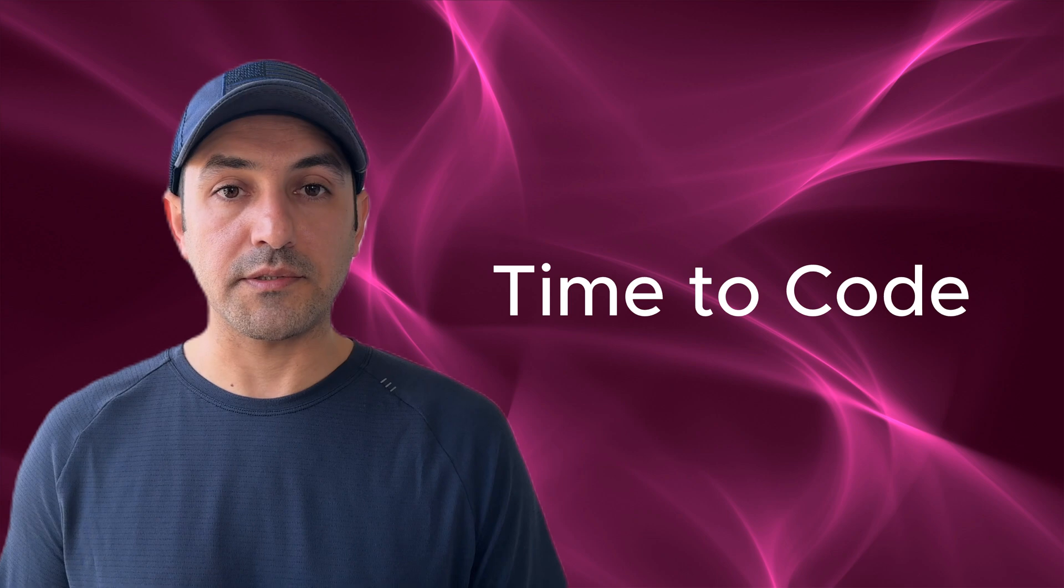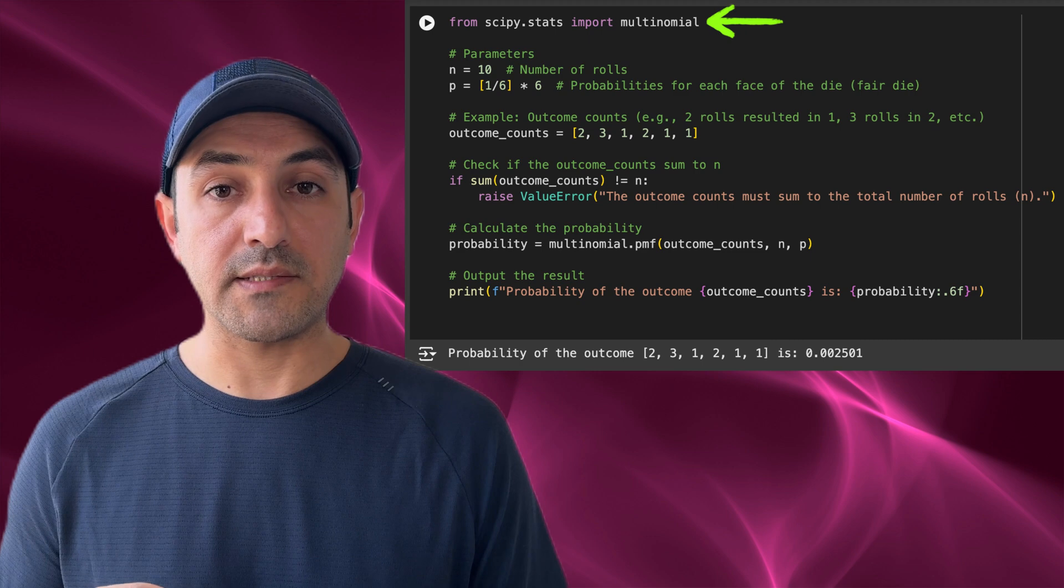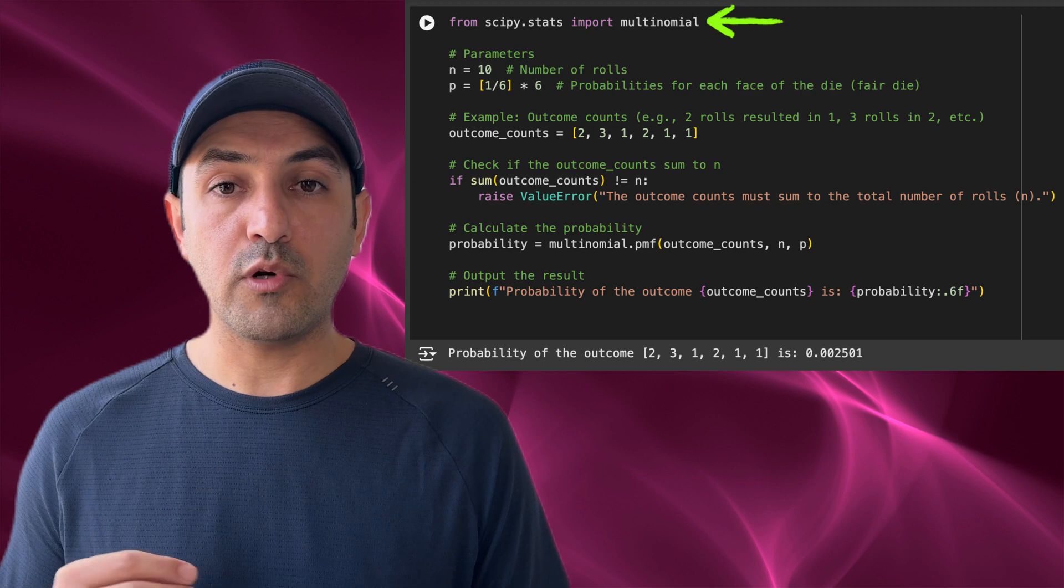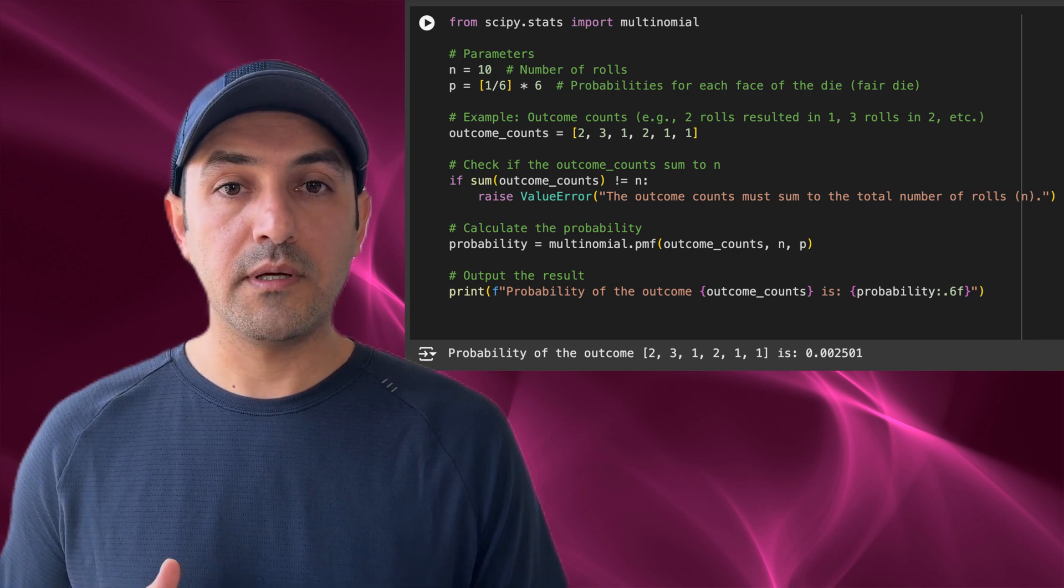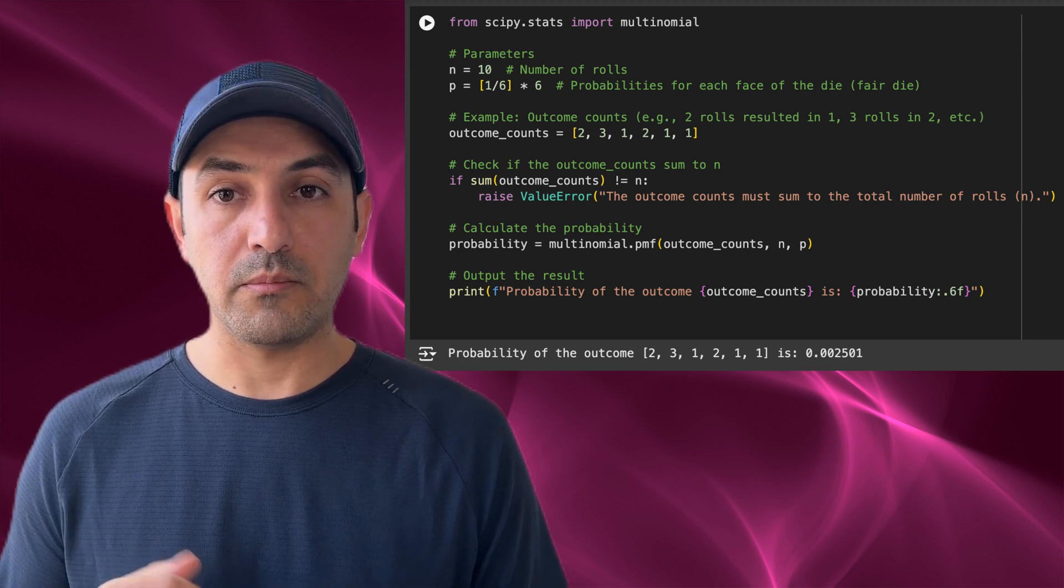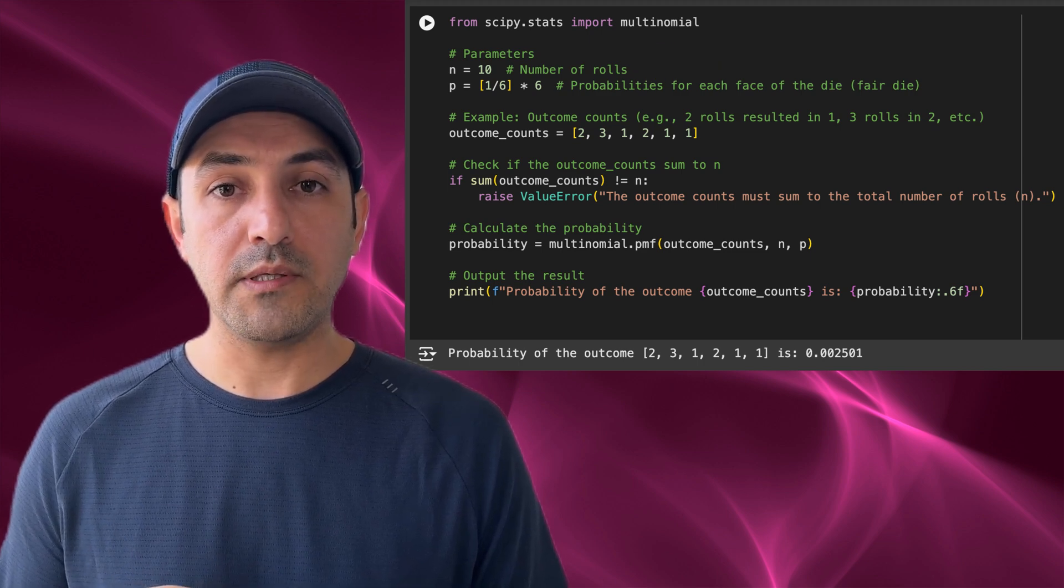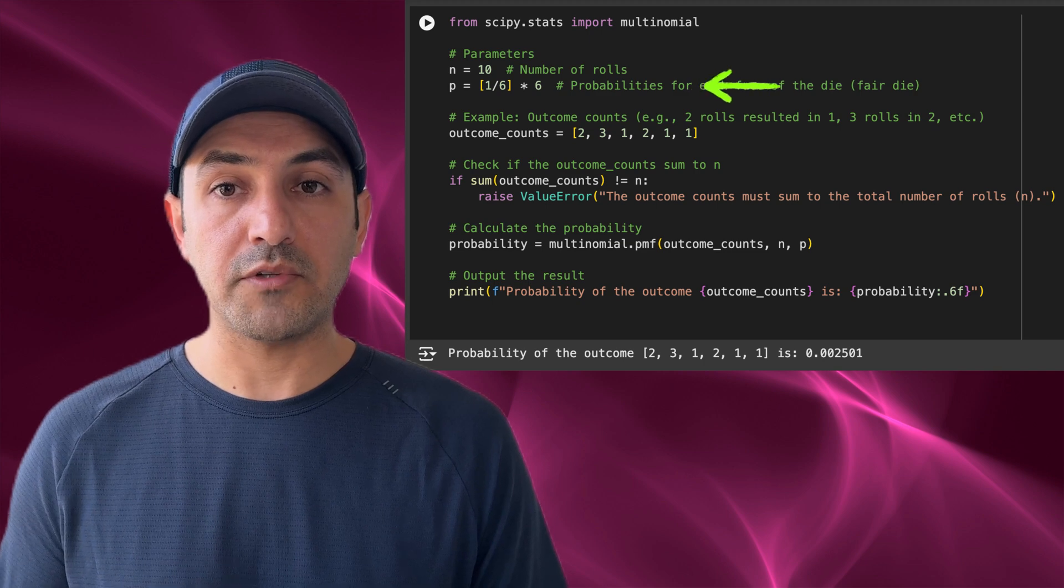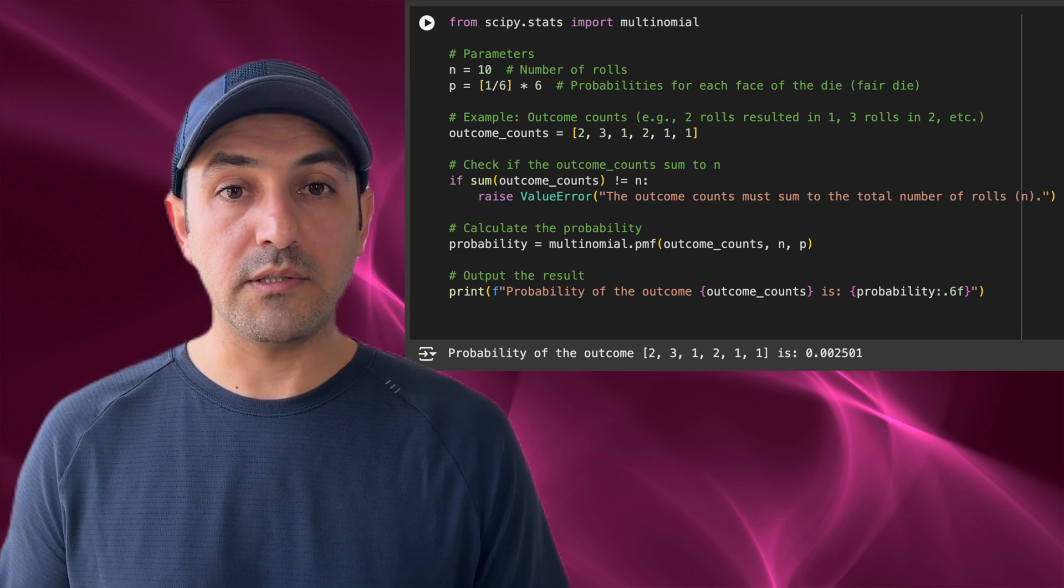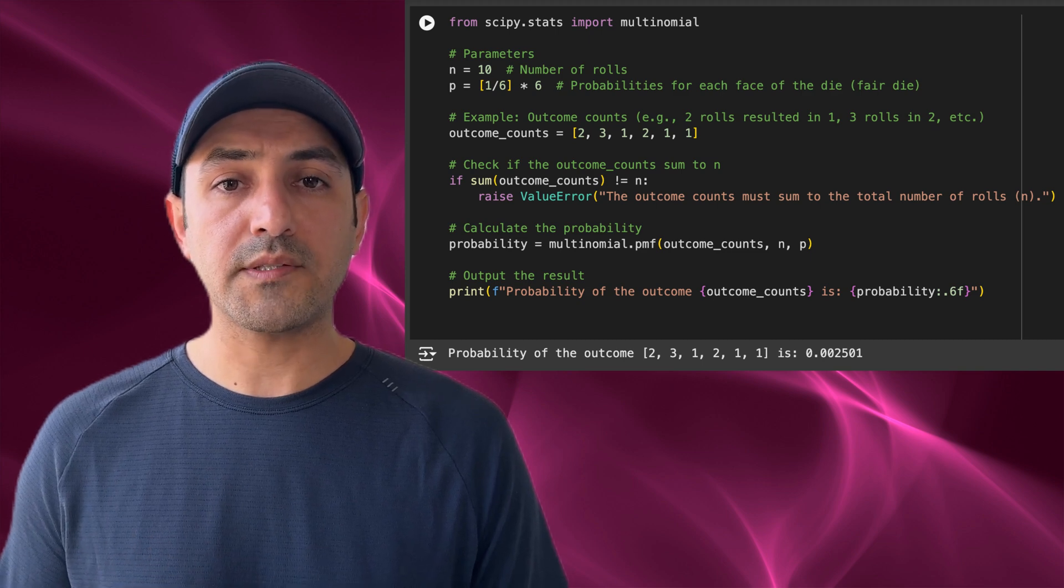Now that we have covered the concepts, let me show you how to practically perform some of the examples that we just discussed. This code uses the multinomial distribution from the scipy.stats library to calculate the probability of a specific outcome when rolling a fair six-sided dice 10 times. Let's break it down together. First we define the parameters of the problem. This variable n represents the total number of rolls, which is set to 10. And p is the probability of each face of the dice appearing on any roll. Since the dice is fair, the probabilities are evenly distributed, so each face has a probability of one over six.